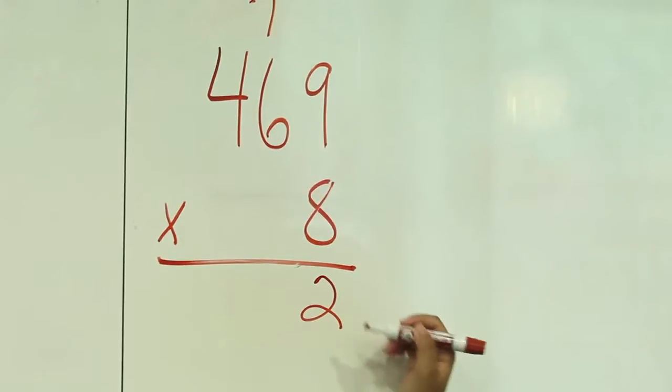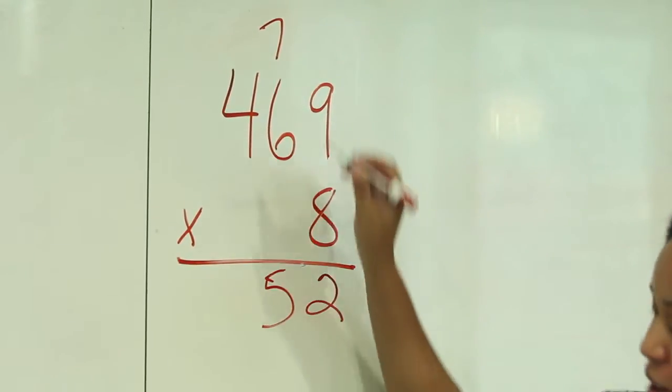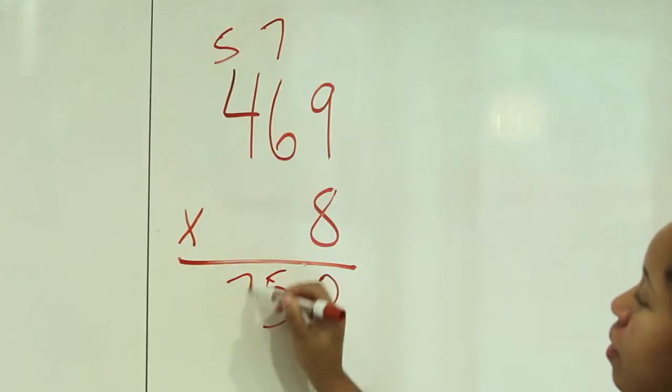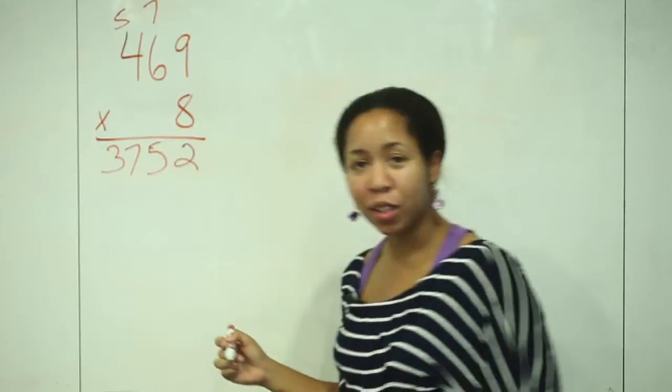Two goes down here, seven goes down here, five, five, thirty-seven. Looks familiar, right?